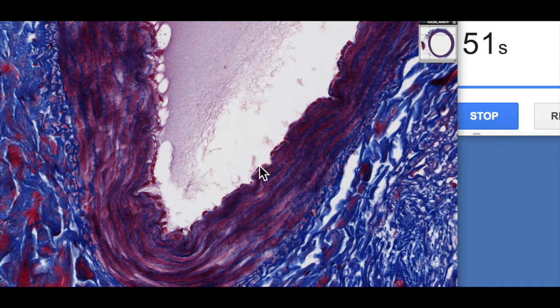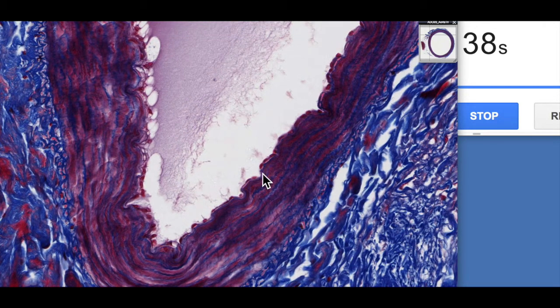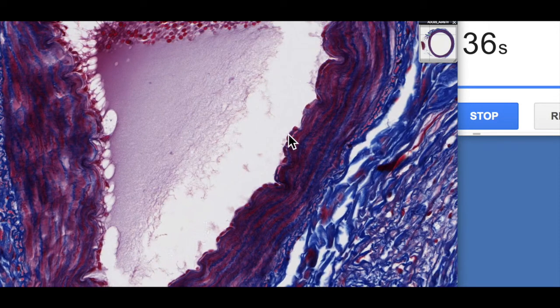We've got the simple squamous endothelium, and then we've got our loose connective tissue, and then we'd have a band of tunica intima, which is known as the internal elastic lamellae.